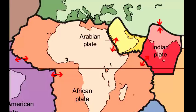The green plate is the Eurasian plate, the yellow plate is the Arabian plate, and the salmon-colored plate is the African plate.